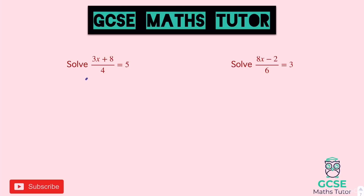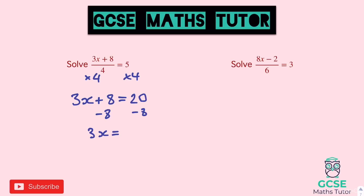For the first one: multiply both sides by 4, giving 3x plus 8 equals 20. Subtract 8 from both sides to get 3x equals 12. Then divide by 3 and we get x equals 4.